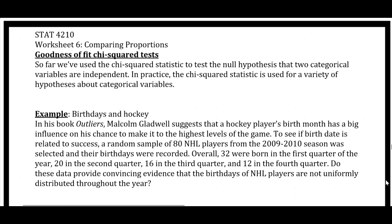So far, we have seen chi-squared tests used to test for association between two categorical explanatory variables. This next section talks about using a chi-squared test to look at whether a proposed model is a good fit for the data. Instead of being an extension of a two-sample z-test for comparing proportions, this is more like an extension of the one-sample z-test for proportions. In practice, the chi-squared test is really used for a variety of hypotheses about categorical variables. In this case, we have one categorical variable of interest — we're not interested in whether two variables are associated, we really want to know whether a specified model is a good fit.